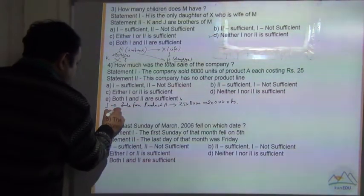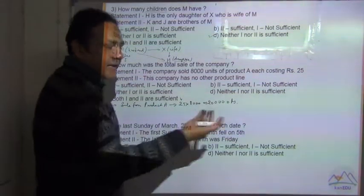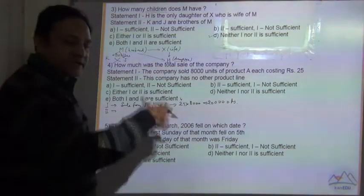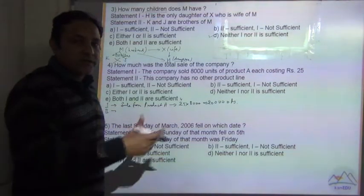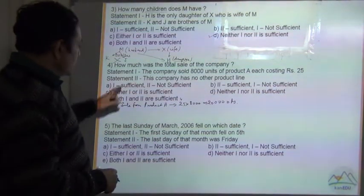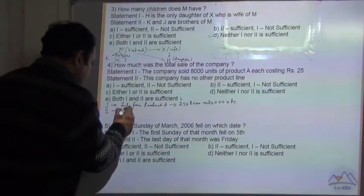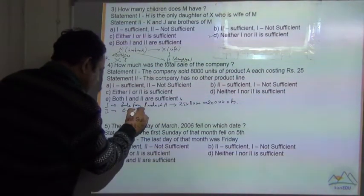Now statement 2: there can be more than product A. There can be product B, C, D, E, F, G, etc., so their sale can also be part of the sale of the company. Statement 2 says the company has no other product line, so only product A.